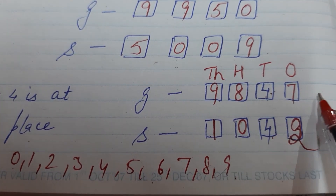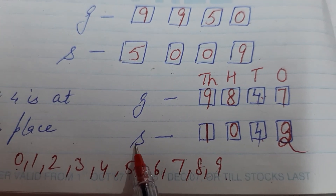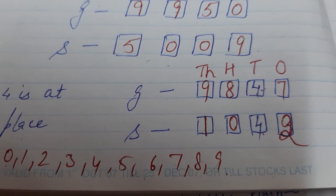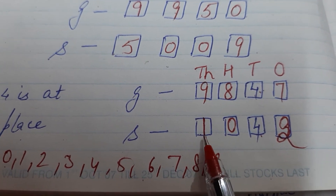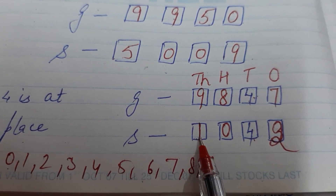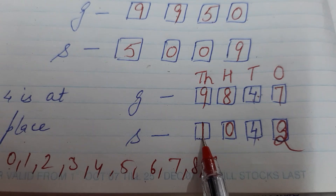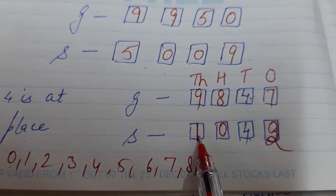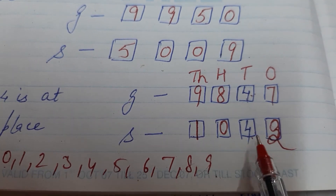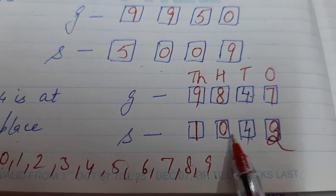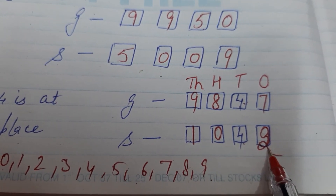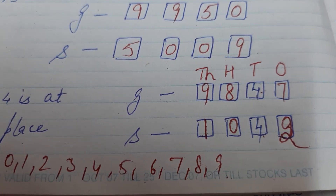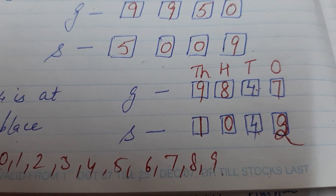For the smallest number, I am not going to start with 0 because that would make it a three-digit number. So I start with 1 at thousands, then 0 at hundreds, 4 is already at tens, and then 2 at ones. So the smallest number is 1042. We are not repeating digits in this question. I hope you understand. Thank you so much.